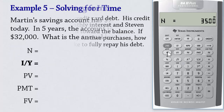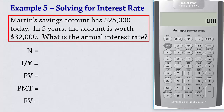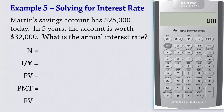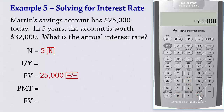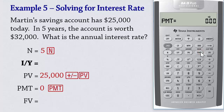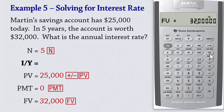Next, we solve for interest rate. Martin's savings account has $25,000 today. In 5 years, the account is worth $32,000. What is the annual interest rate? Since interest is compounded annually for 5 years, we input 5 N. We input negative $25,000 present value because it's an outflow. We enter 0 payments as there are no periodic payments. For future value, we enter $32,000 FV. We then compute the interest rate IY, which gives 5.06%. And that concludes this tutorial. Thanks for watching.